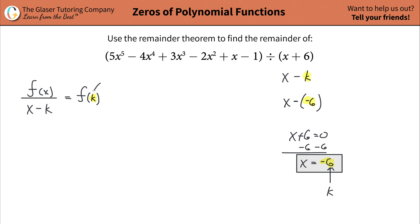In other words, the function's value evaluated when all the x's in your function is negative 6. So what you're going to do is take this function and plug in negative 6 everywhere you see x.